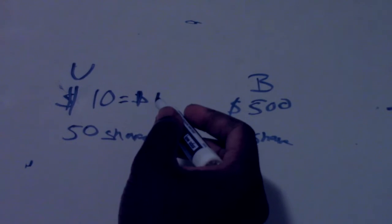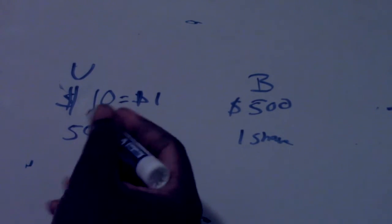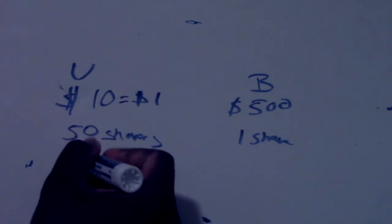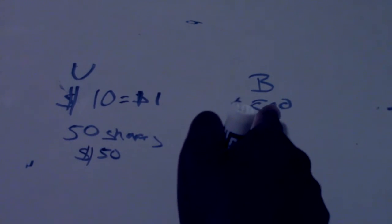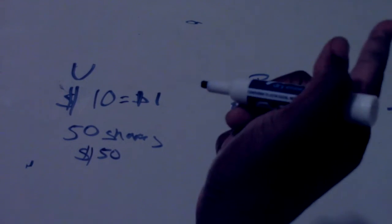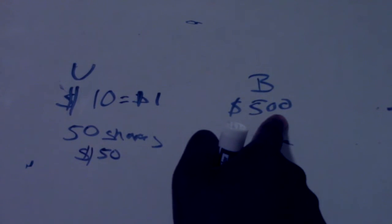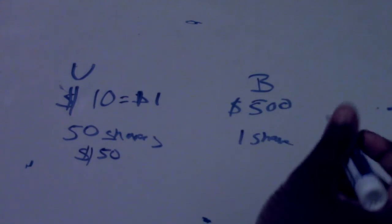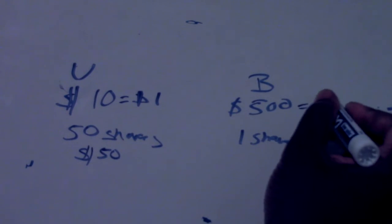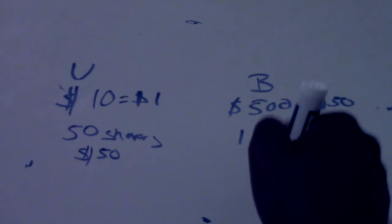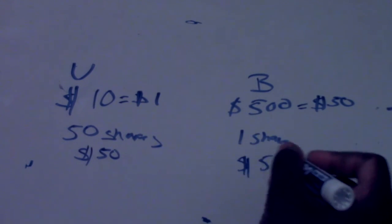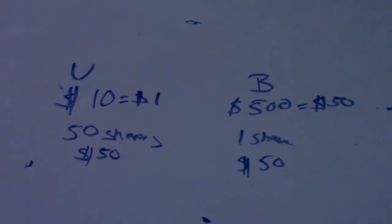If this stock moves 10%, 10% of $10 is $1. So the stock moved 10%, I made $1 per share. I got 50 shares. How much money did I profit? $50. Now we go over here, this stock moves 10%. 10% of $500 is $50. $50 times one equals $50.